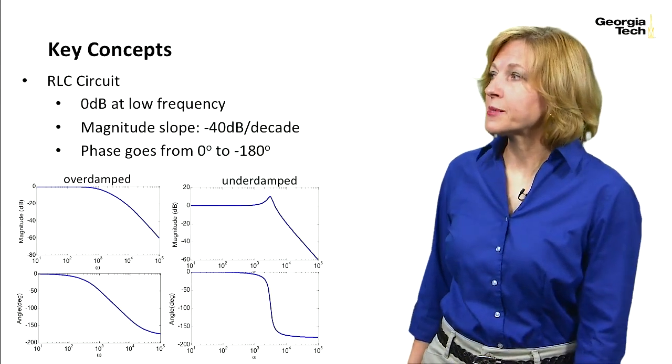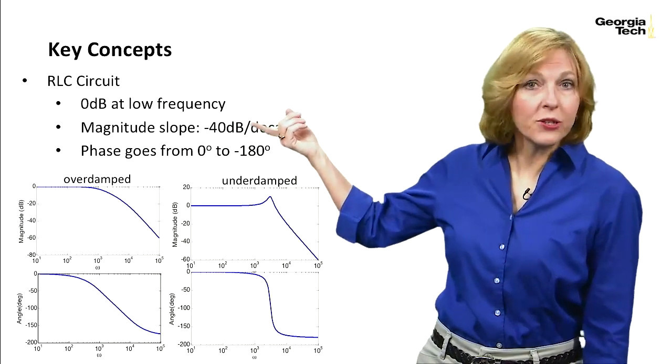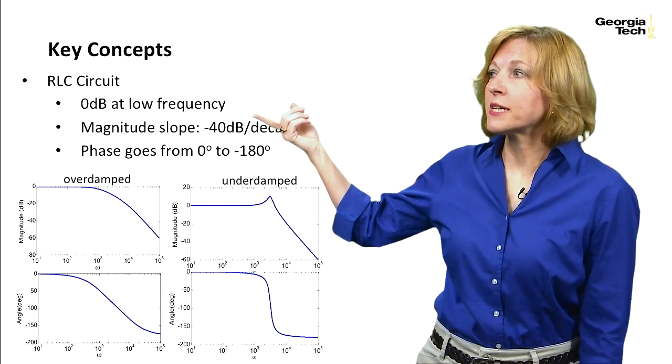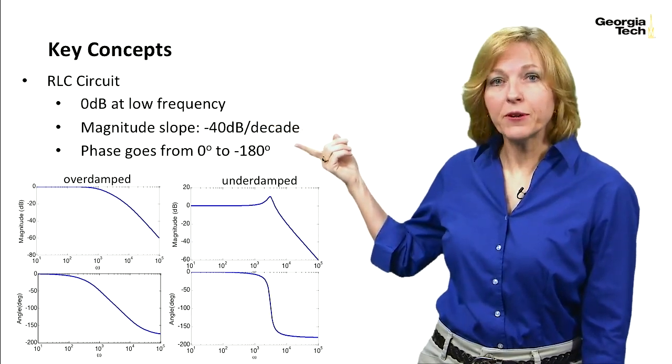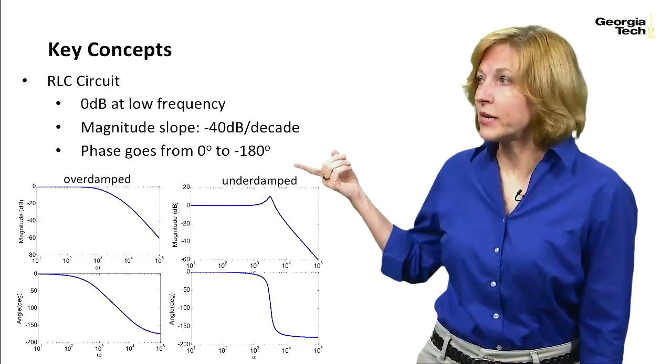So our key concepts. We looked at RLC circuits, and we found that at low frequency, whether it was underdamped or overdamped, we had zero decibels at low frequency. At high frequency, minus 40 dB per decade, our phase went from zero to minus 180.